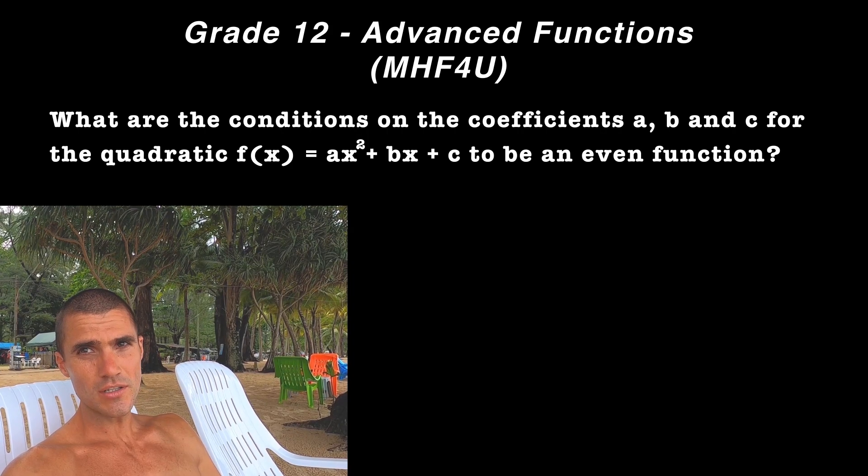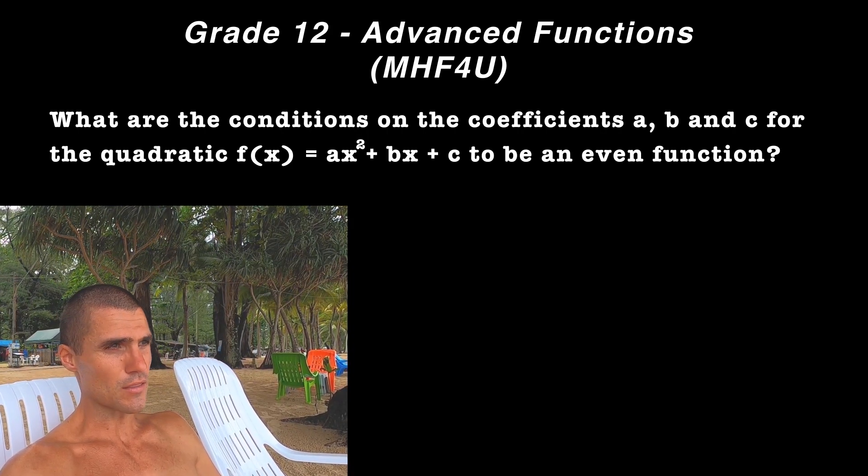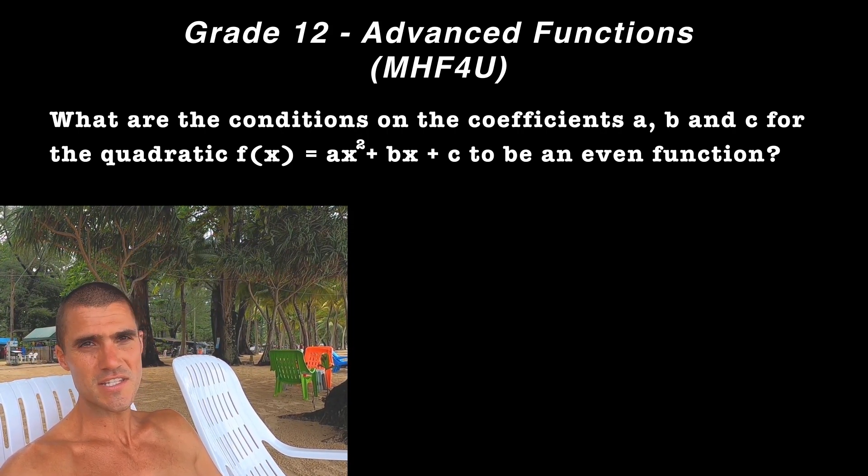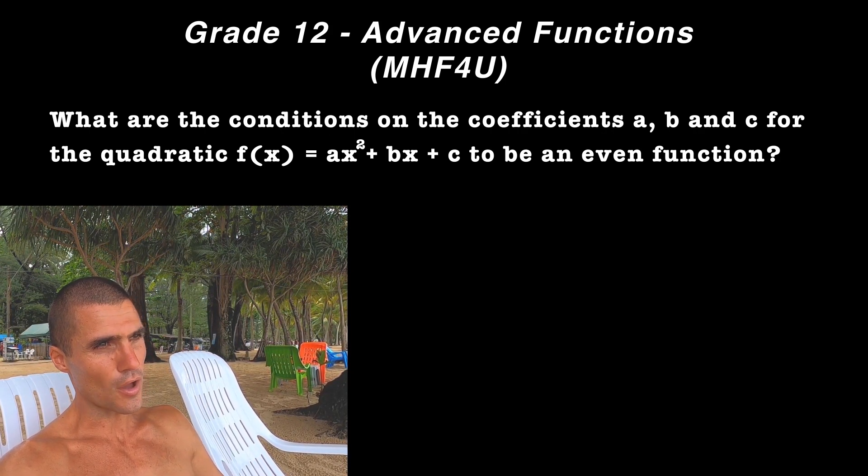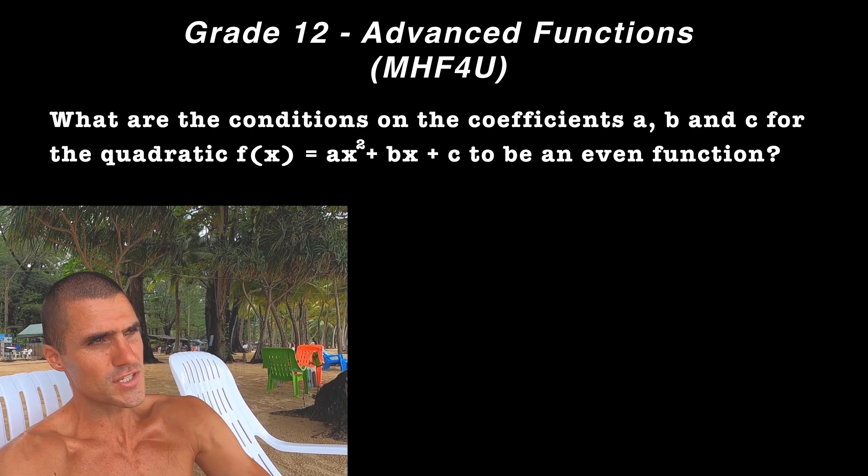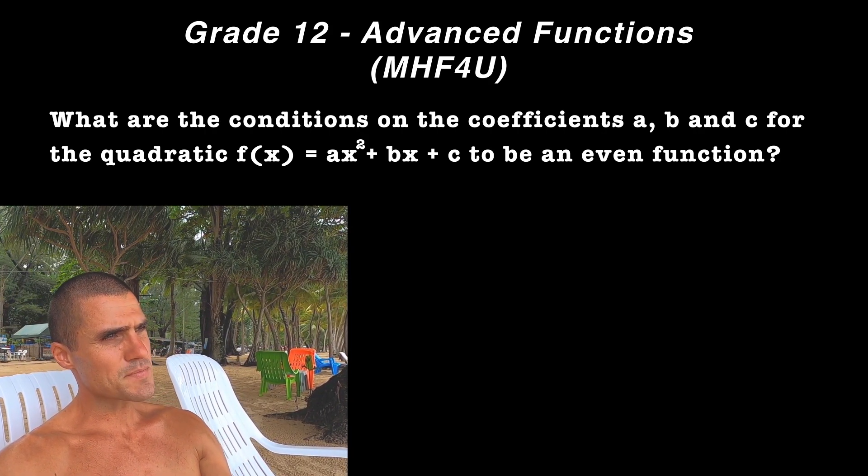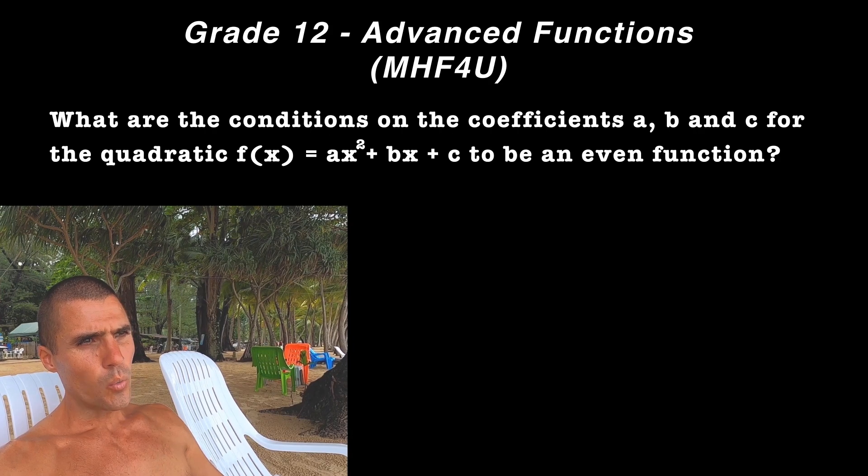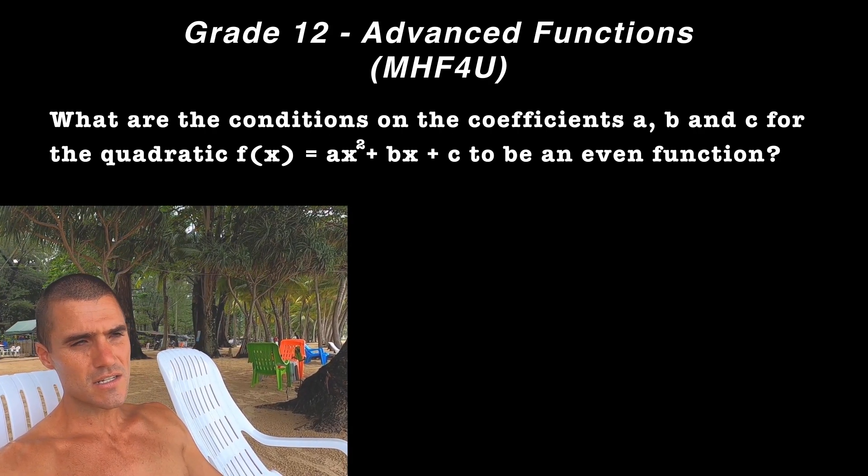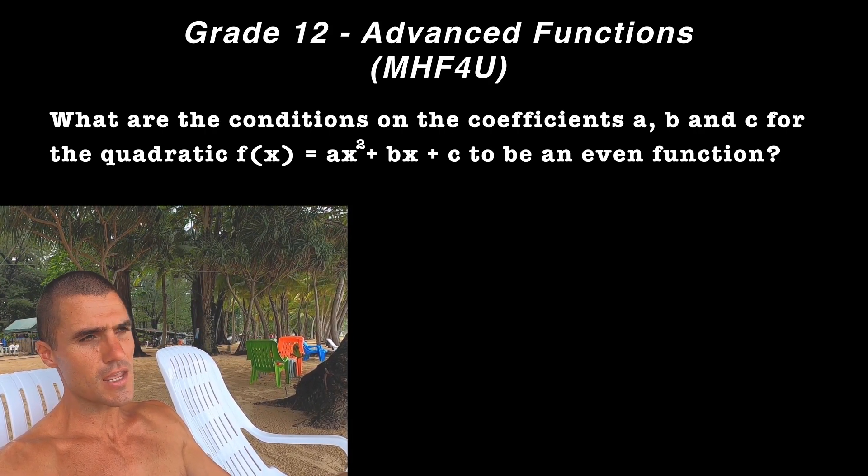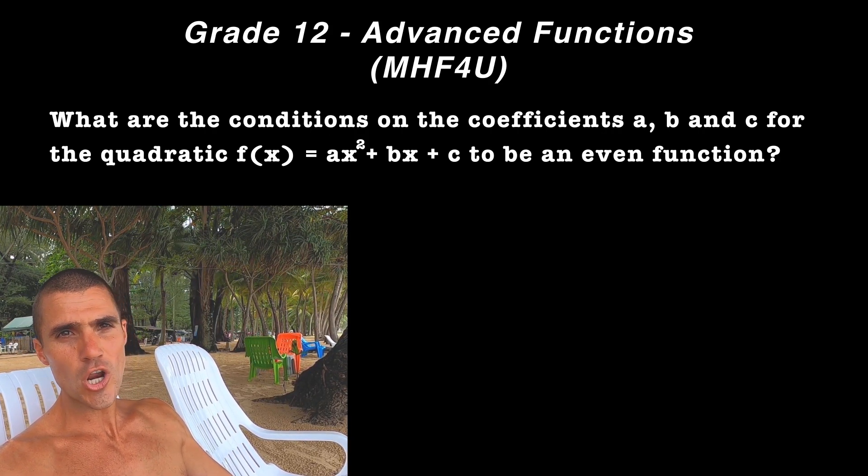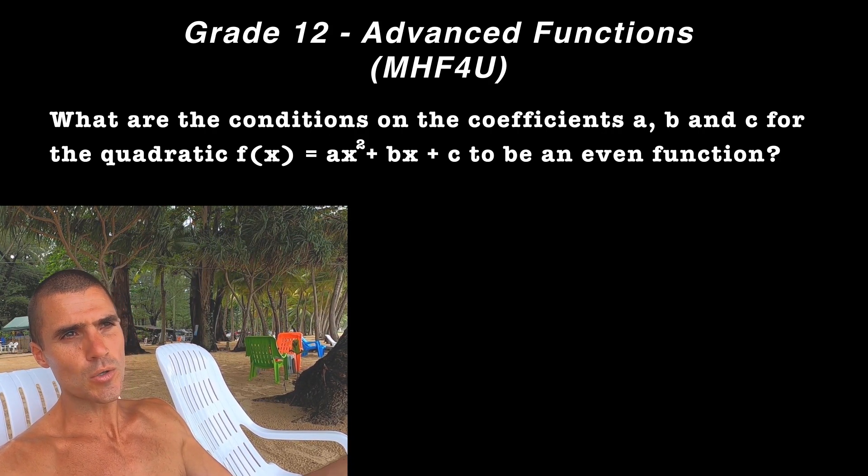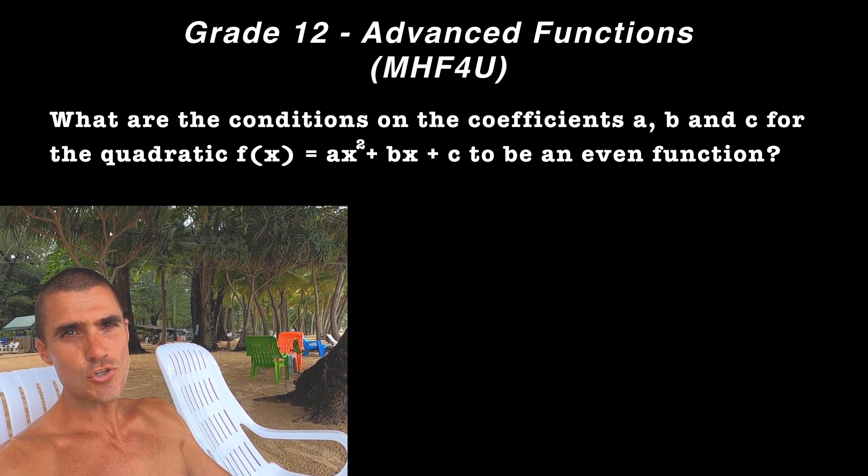a particular question that a student emailed me the other day. It's a question I haven't seen—I don't have a video on it—and so I wanted to make one. It has to do with odd versus even functions, characteristics of functions. It's basically asking: what conditions have to be present on the coefficients a, b, and c in order for the quadratic f(x) = ax² + bx + c to be an even function?